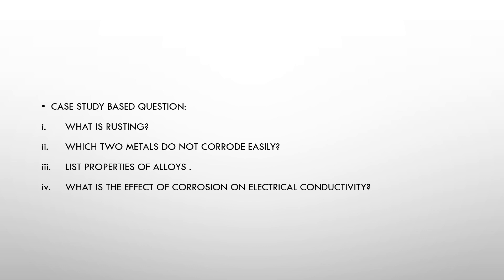Questions associated with this paragraph: (1) What is rusting? Rusting is the process when iron corrodes due to exposure to the atmosphere. (2) Which two metals do not corrode easily? Aluminium and magnesium. (3) List two properties of alloys: alloys generally have a low melting point compared to metals, and they have low electrical conductivity compared to metals. (4) What is the effect of corrosion on electrical conductivity? Corrosion generally decreases electrical conductivity.